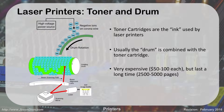Inside the laser printer there's a high voltage power source that negatively charges what's called the corona wire, which in turn charges the drum negatively so that all the negative ions go onto the drum. When the laser — that's why it's called a laser printer — hits the drum, it positively charges certain areas to make the image we want. Those positively charged areas attract the toner to the drum, the drum is then rolled against the paper transferring the toner, and then it goes through the fuser that melts it onto the paper.